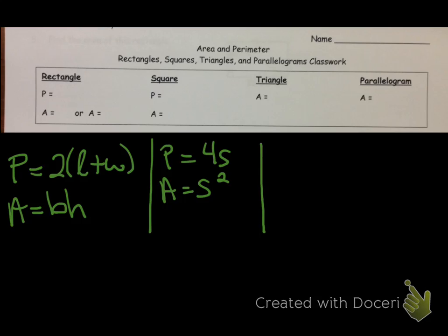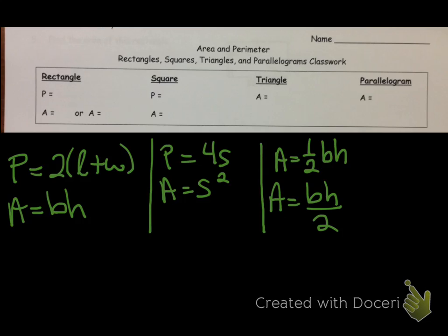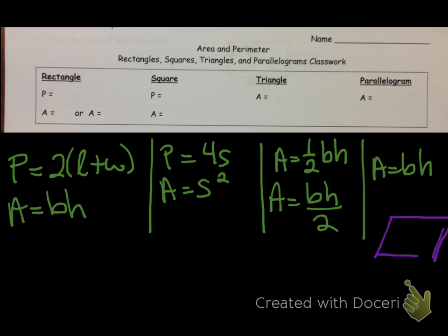Triangle: there's no formula for perimeter because you're just adding the 3 sides. The area is 1/2 times the base times the height, or base times height divided by 2 — they're the same thing. And a parallelogram is exactly like a rectangle, so area is base times height. The only difference is that if you have a parallelogram, in order to know the height, you've got to know the perpendicular height, because that's how tall the parallelogram is.